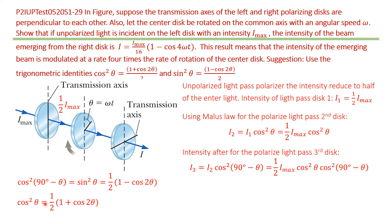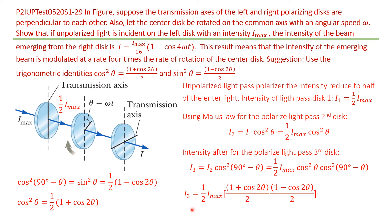Also for cosine squared theta, we have it equal to one half of one plus cosine 2-theta. Using both identities in our expression for I₃, we get I₃ equal to one half of I-naught times the quantity one plus cosine 2-theta over 2, times the quantity one minus cosine 2-theta over 2.